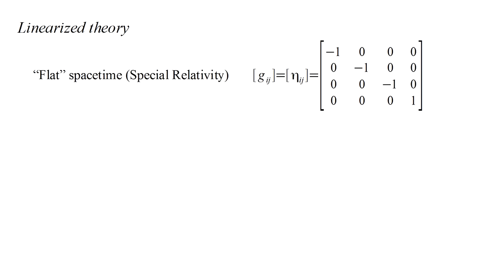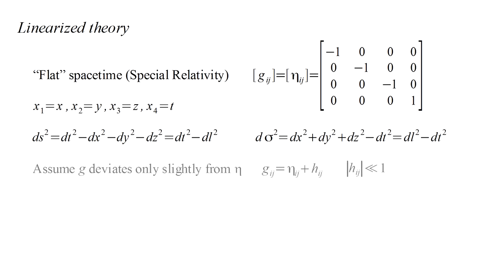We'll use Greek letter eta to denote the flat spacetime metric of special relativity. Calling our coordinates x, y, z, and t, the proper time and distance formulas are as shown here. The key assumption of the linearized theory is that the metric deviates only slightly from the flat spacetime form. We write gij equals eta ij plus hij, where the h components are very small. A product of two or more of the h components is negligible, and we drop these from our calculations.